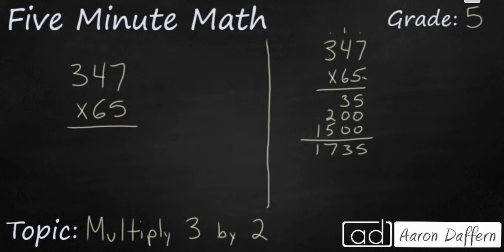But I'm not done yet. Now I need to multiply the 6, and that 6 is really 60. I'm going to multiply that by 7, by 4, and by 3. And so we'll do 6 times 7 is going to be 42. But since that's really 60, it's actually 420.